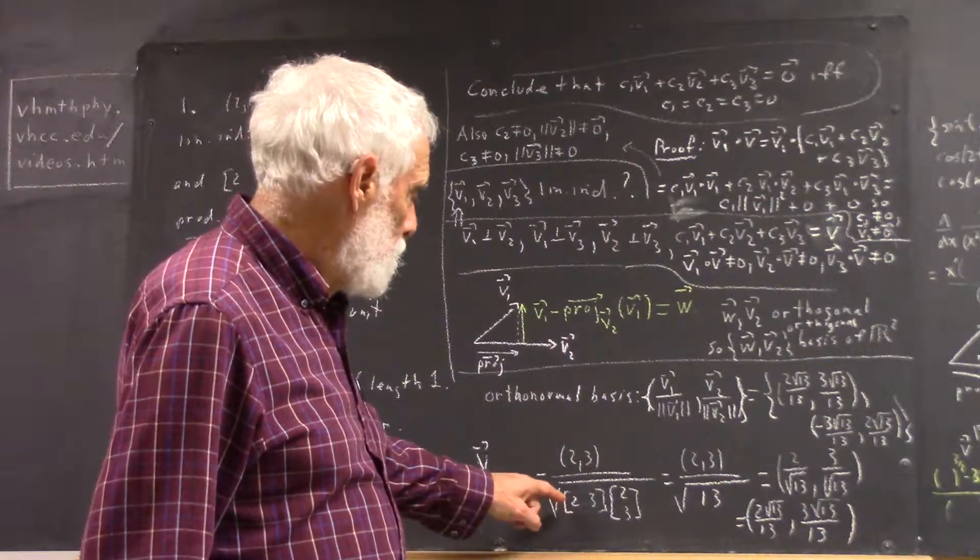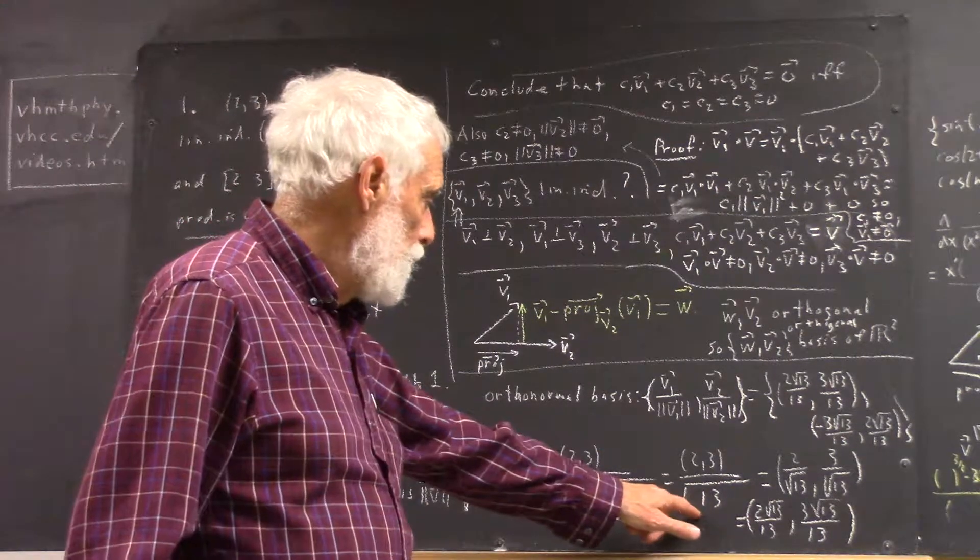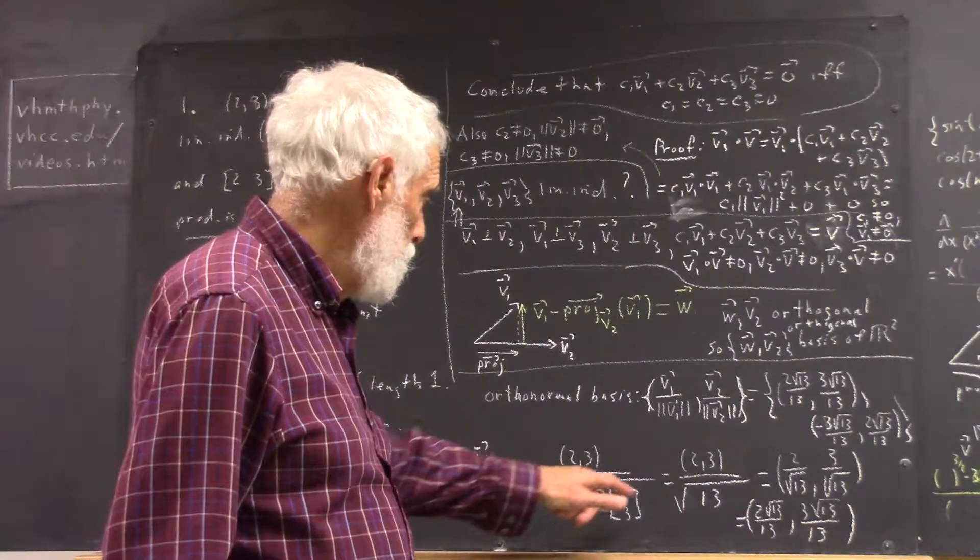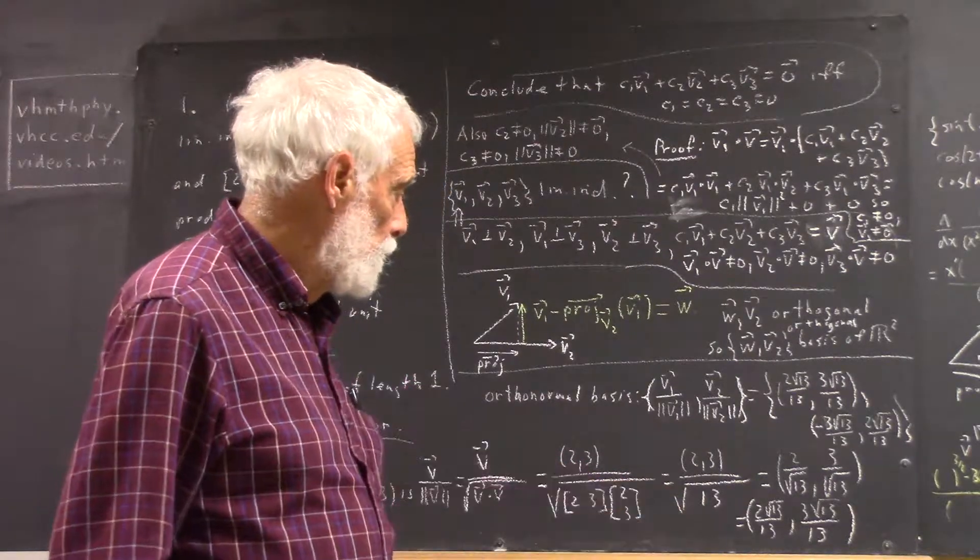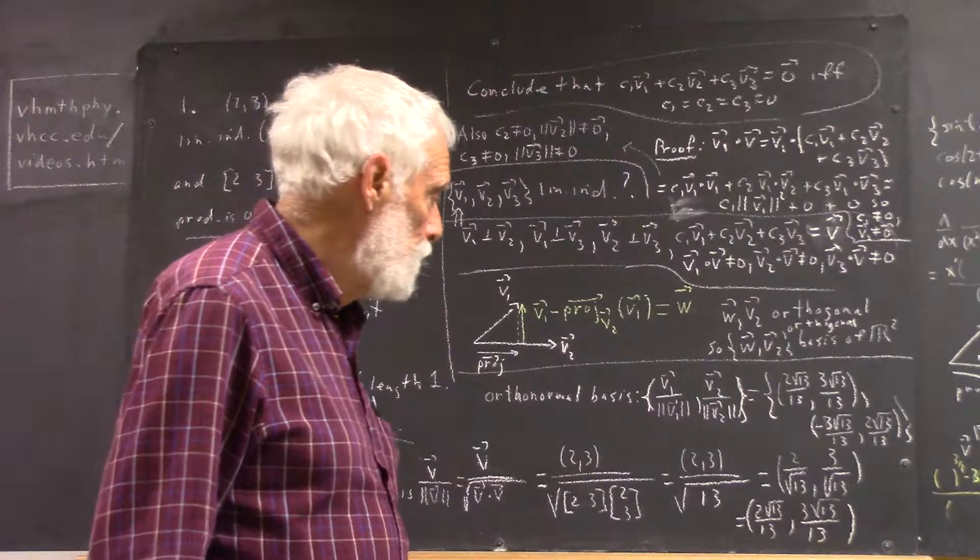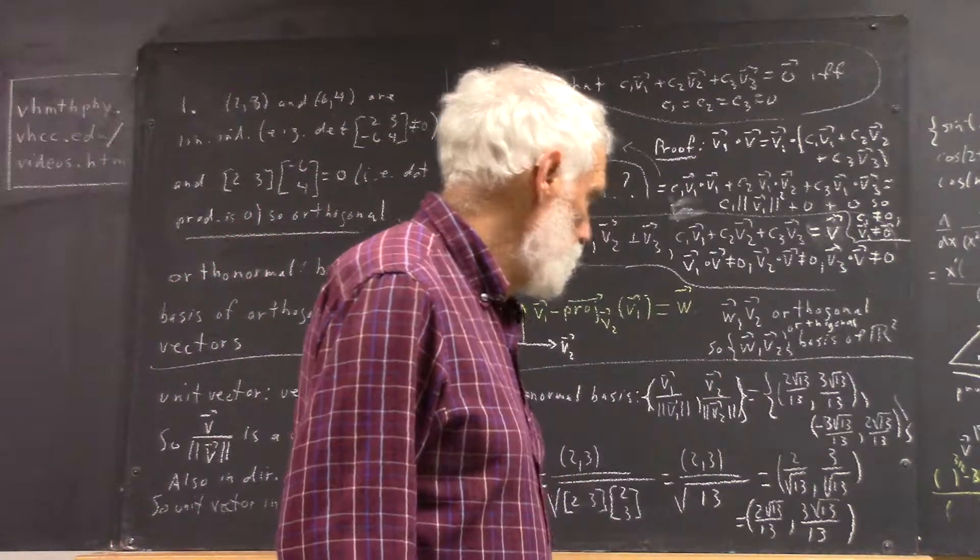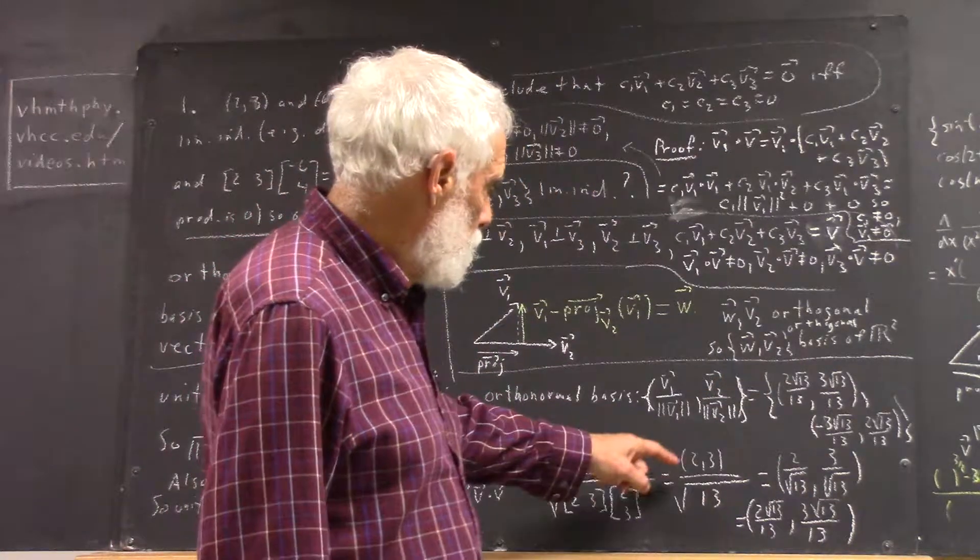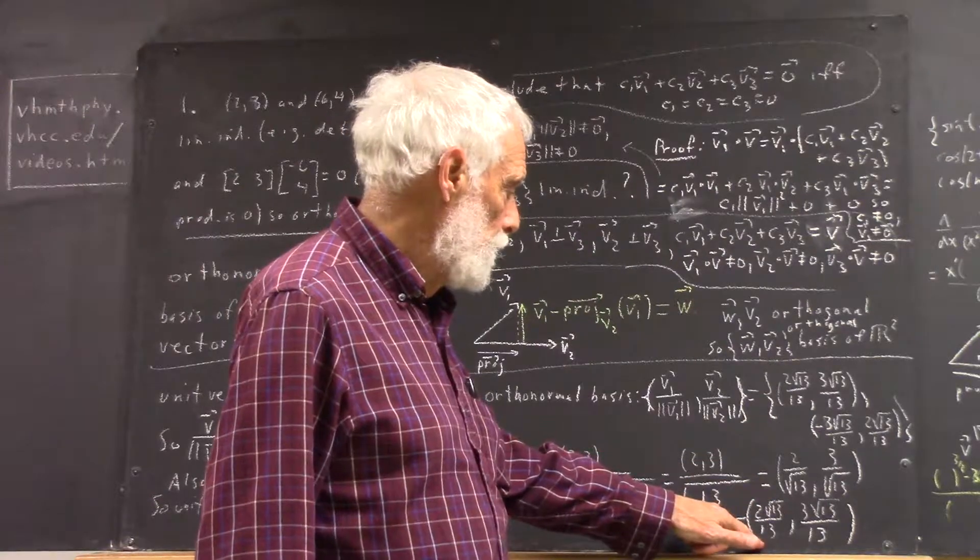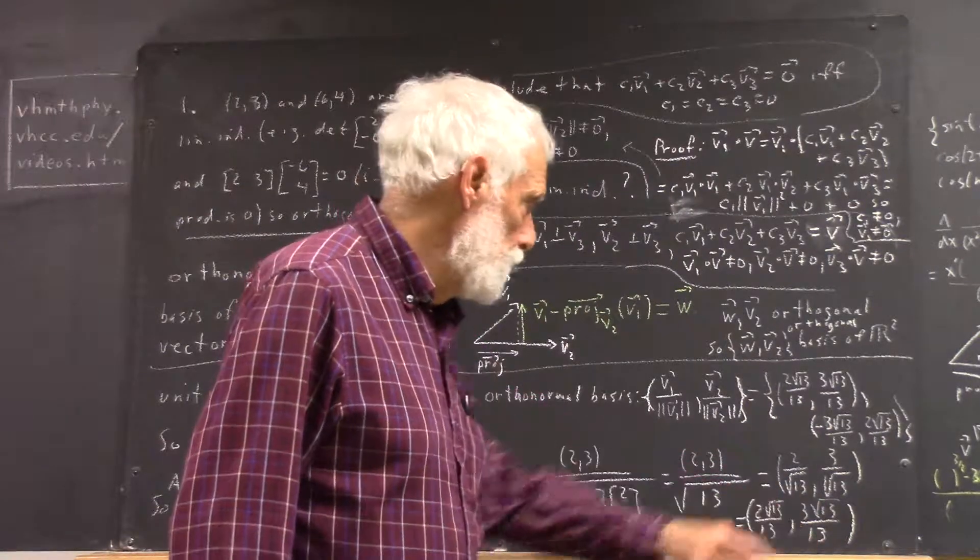And I write the dot product as the row by the column. That comes out 13, so we have magnitude square root of 13 into (2, 3), and then the rest is very simple. The simplified result is 2√13/13, 3√13/13.